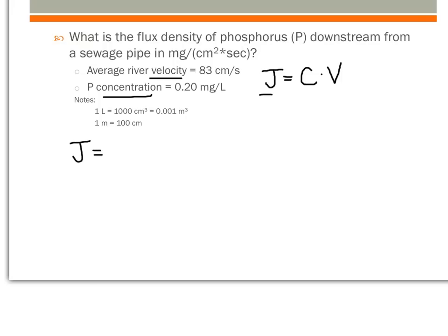J equals the river velocity, 83 centimeters per second, times 0.2 milligrams per liter.